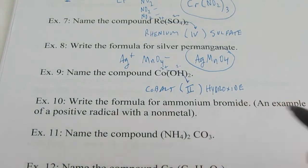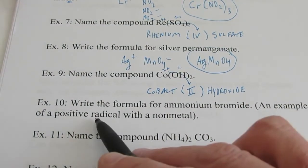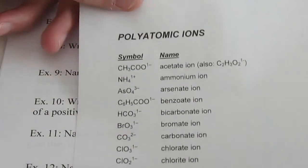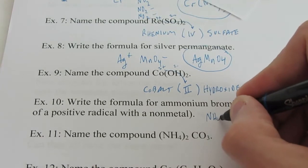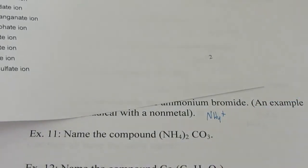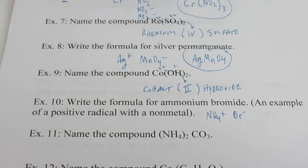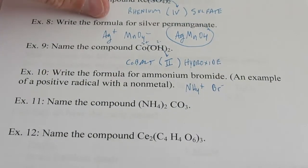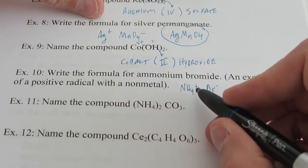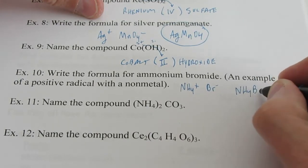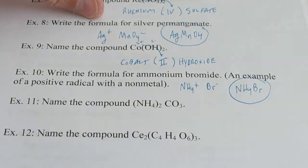Let's try ammonium bromide. This is going to be a positive polyatomic ion with a nonmetal. Ammonium is really the only positive polyatomic of consequence — it's NH4 positive one. And bromide comes from bromine, which is in group seventeen, a halogen, so that's Br with a negative one charge. Recall that the sum of the charges needs to add up to zero. Ammonium is positive one, bromide is negative one, so we just need one of each. The formula is NH4Br. It's as simple as that.